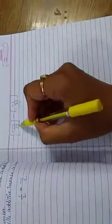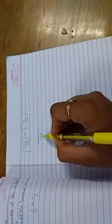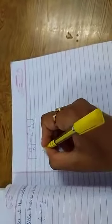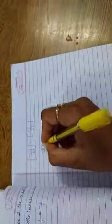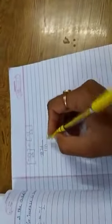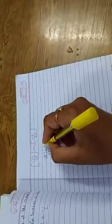And 4 minus 5 becomes minus 1 upon 22. Now solve this. LCM of 10 and 22 will be 110. 110 divided by 10 will be 11 and 11 multiply 17 will be 187. Minus and minus become plus.